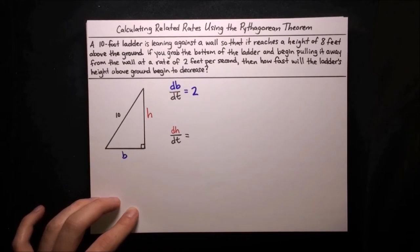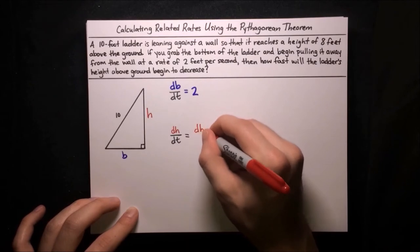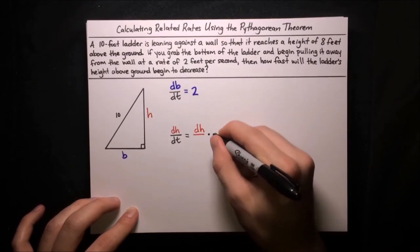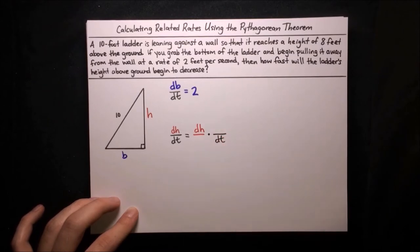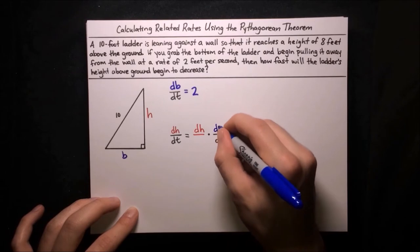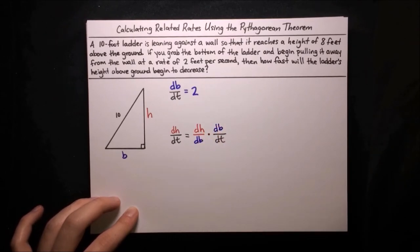Now look back to dh/dt. Like we usually do, we're going to want to pull that apart into dh/db times db/dt. Since we know what db/dt is, we should choose db to go in the blanks. All that's left is to figure out what dh/db is, and we can find that if we can construct an equation containing h and b.